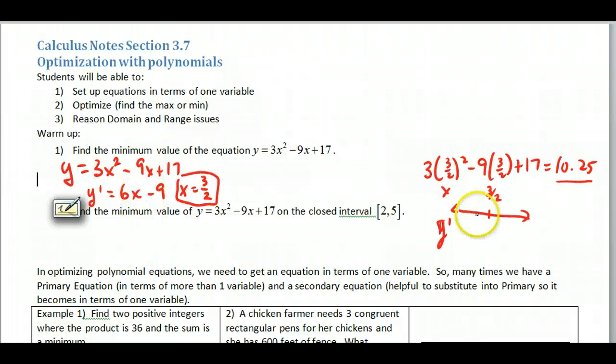And then to the right of 3 halves, pick a number to the right of that, probably 2, that would be a positive. So I'm decreasing then increasing on my original function, therefore this is a minimum value.